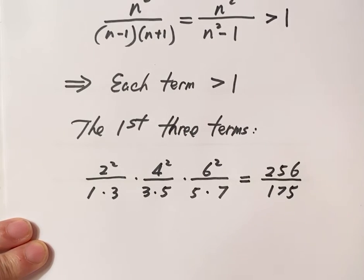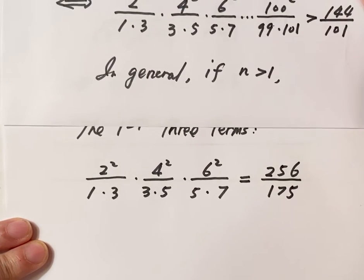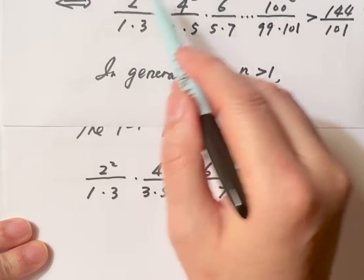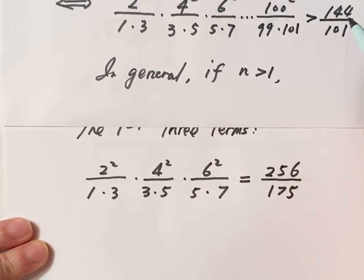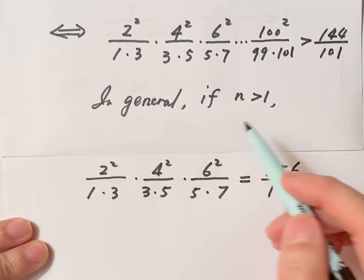The question is we only need to prove the first three terms is bigger than this because the remaining term is always bigger than 1.